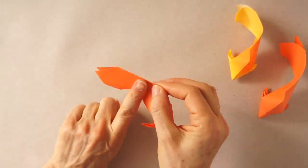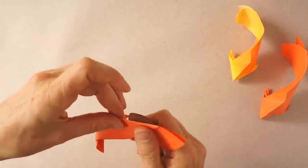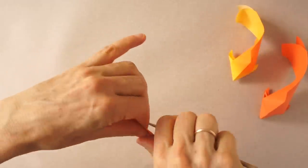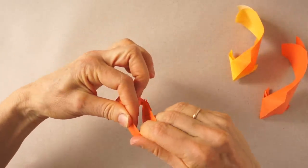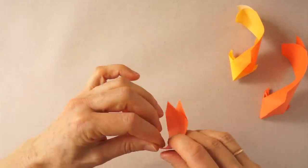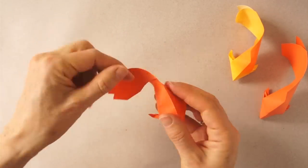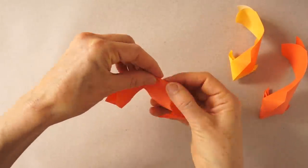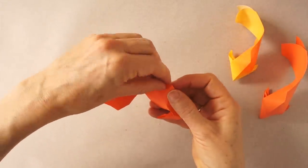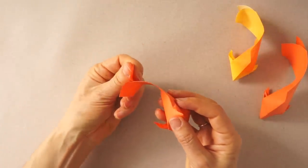Now we are just going to curl this tail. We can do it with our fingers. This top part, we can curl it to one side. We can separate the two layers of the tail.